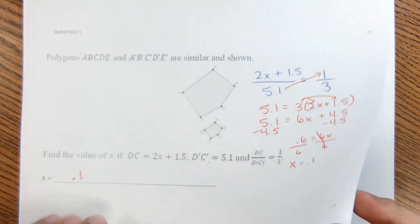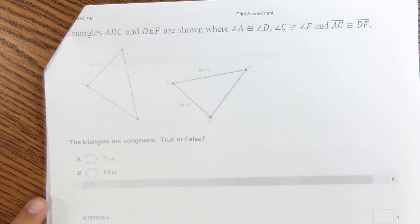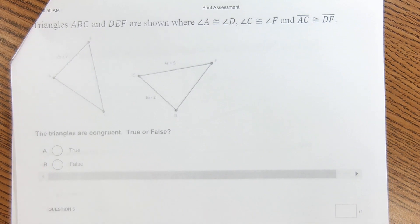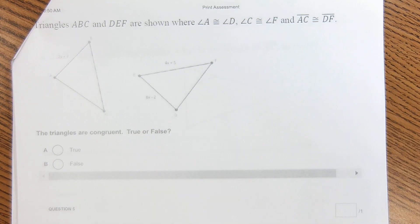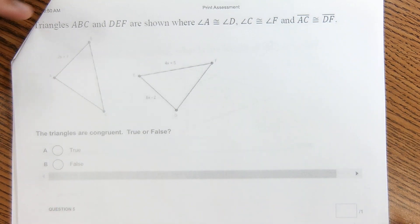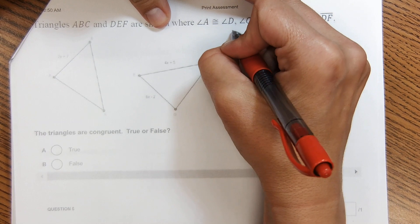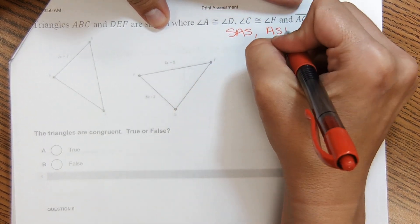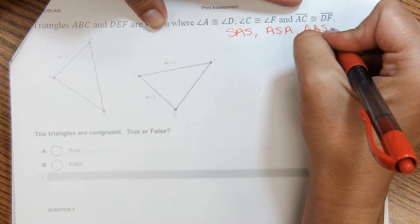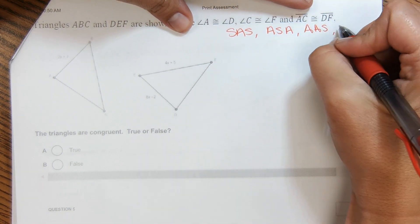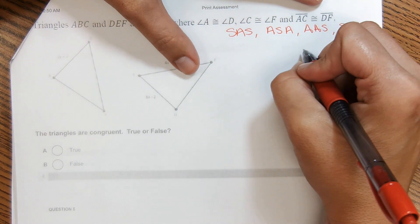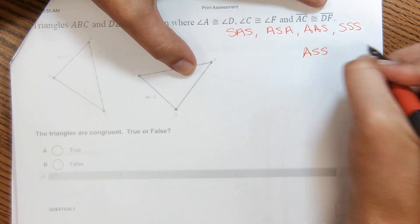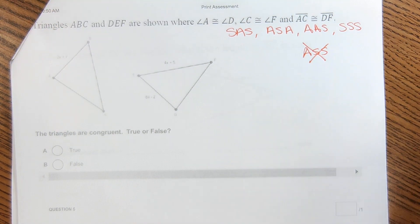Okay, next question. It says triangles ABC and DEF are shown where angle A is congruent to D, C is congruent to F, and AC is congruent to DF. Are the triangles congruent? So what they're looking for here is do you have side-angle-side? Do you have angle-side-angle? Do you have angle-angle-side? So all these things prove that triangles are congruent or side-side-side. We were looking for one of those. The only combination that doesn't work is ASS. So if you get a cuss word, know that that does not prove congruence.